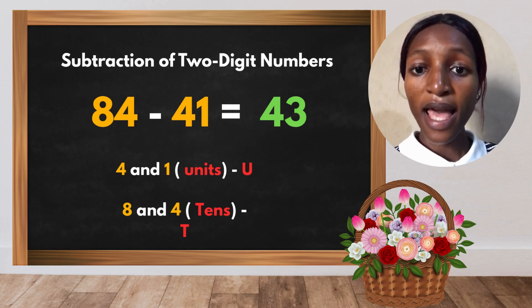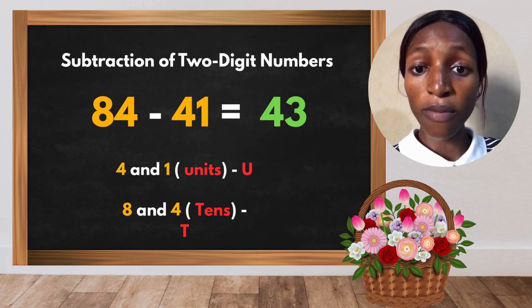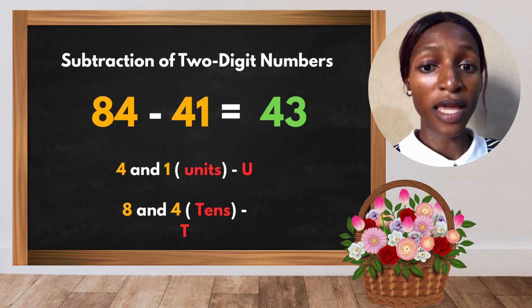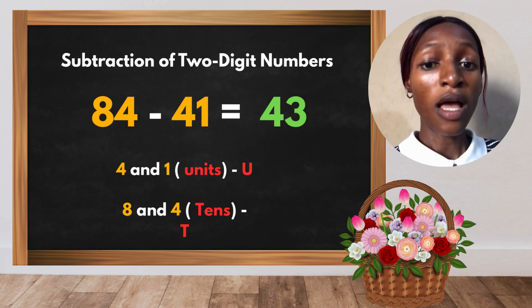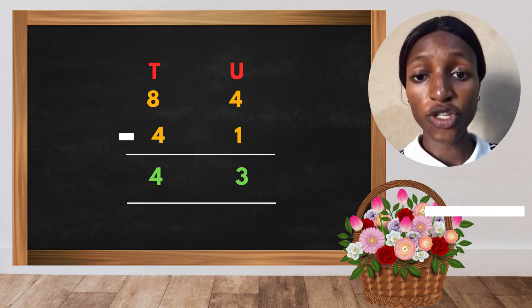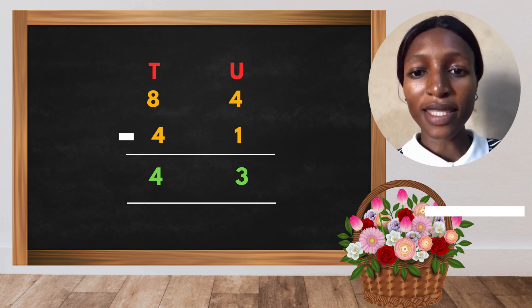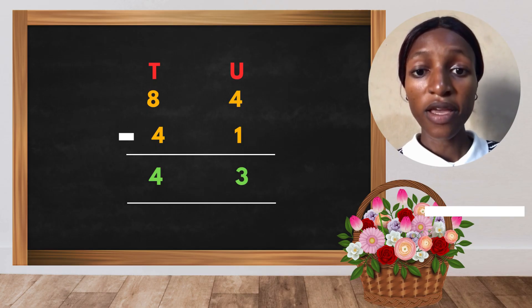Let me explain more about arrangement in mathematics, especially when you are doing addition and subtraction. If you could remember my previous lesson on addition, I told you that whenever you want to do a sum like this, you start from the back, which is the unit. Before you can even start, you arrange your numbers: 84 and 41. Look at the way it is being arranged: the tens and unit.